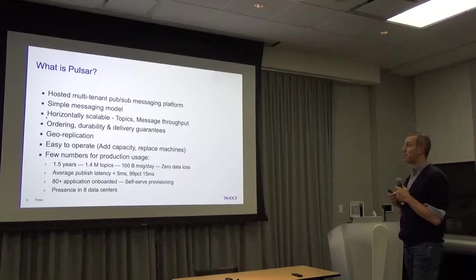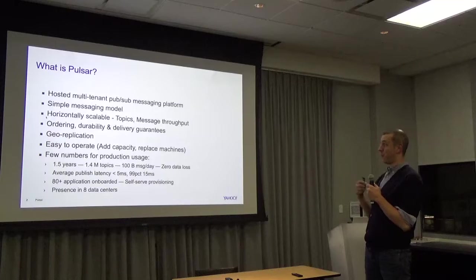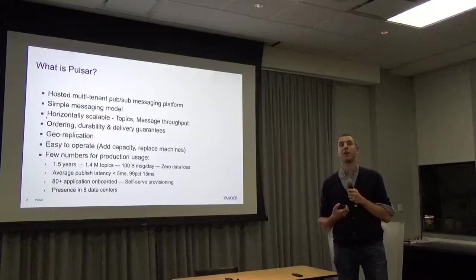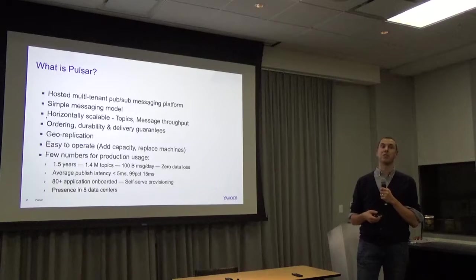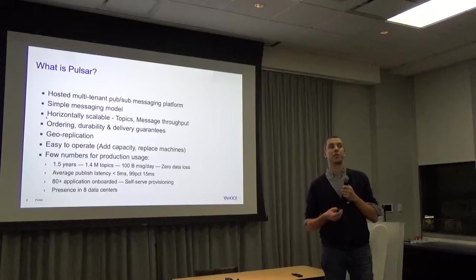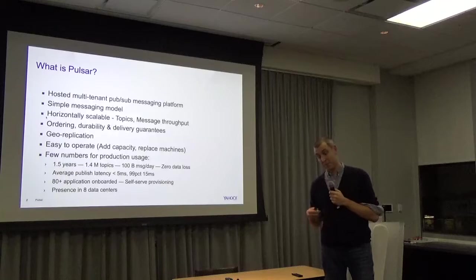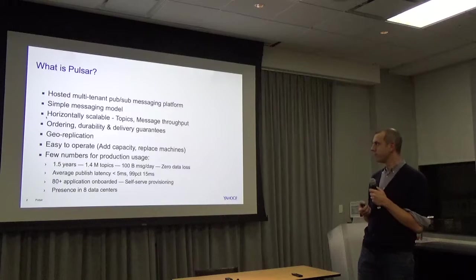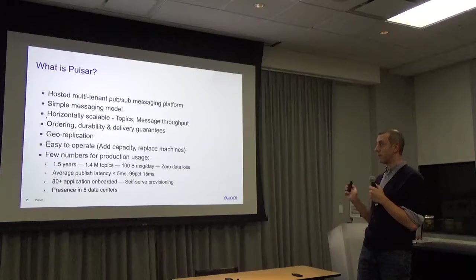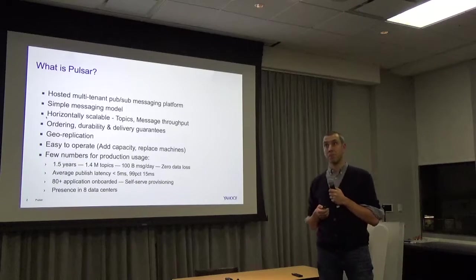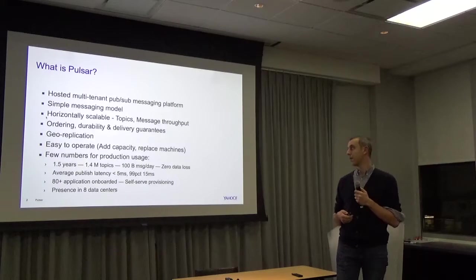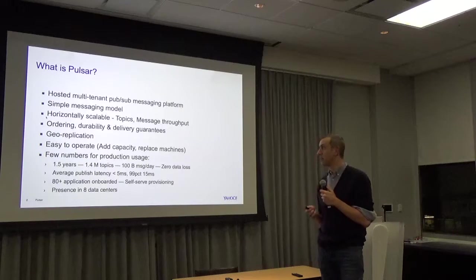An important requirement when we built the system was that we had to guarantee an SLA of low latency. In this context we consider low latency as having averages below 5 milliseconds and the 99th percentile at or below 15 milliseconds. This is a multi-tenant system — we have more than 80 application properties at Yahoo onboarded on our service, and we have presence in eight data centers.